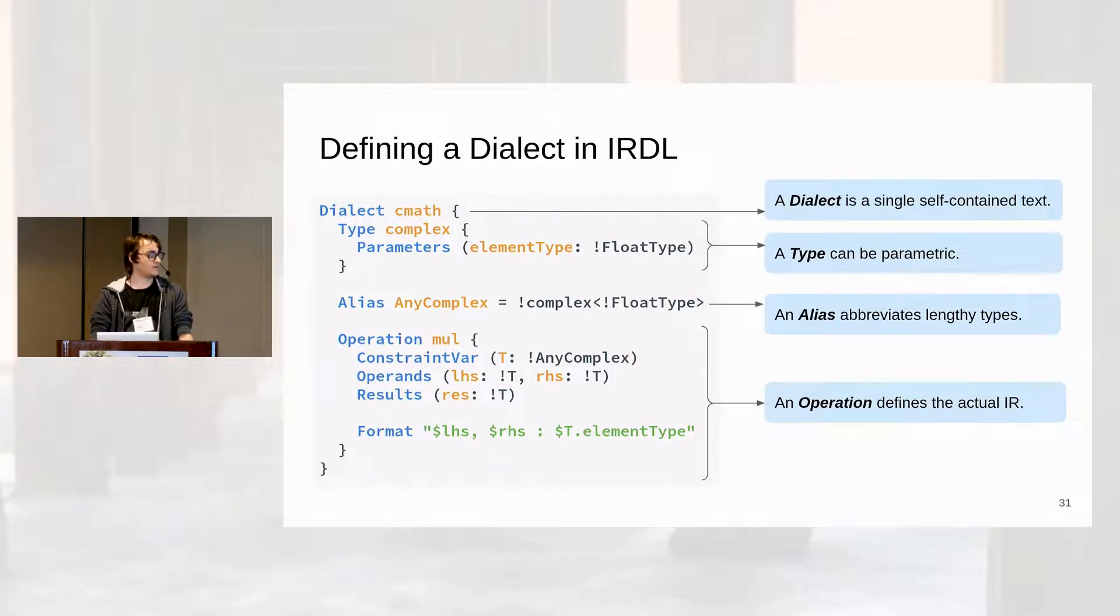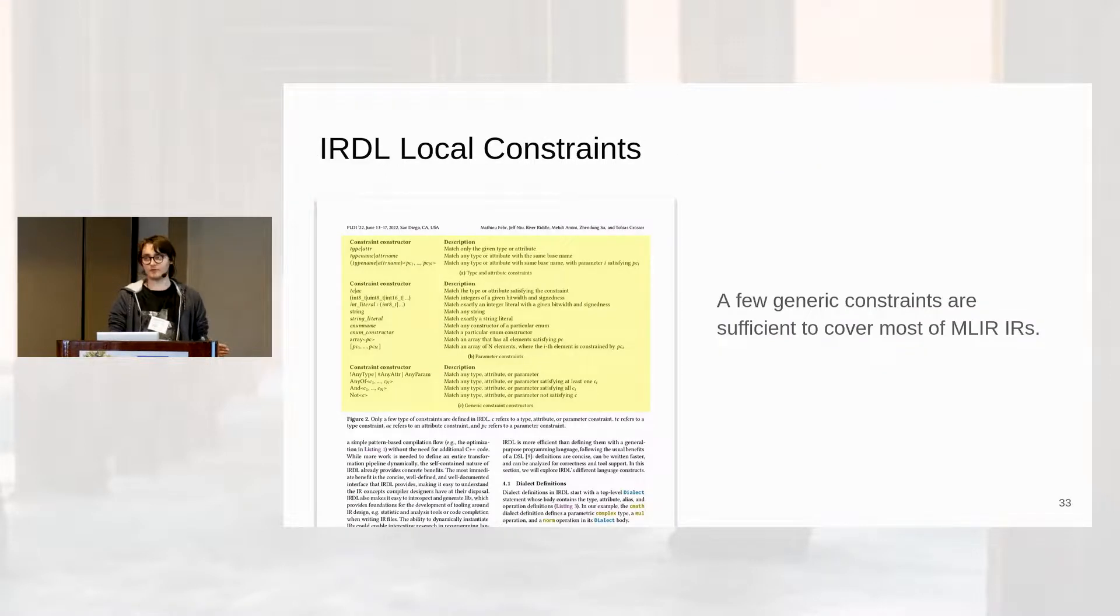Additionally, what you have is an assembly format or a way to print it and parse it in a nice way. Here we can define a custom one that has, whenever you print it, first print the left-hand side, then print the right-hand side, then print the complex type, and essentially print just the parameter of the complex type because you know that everything needs to be a complex type. And that's it. You have a dialect for your complex number representation. As I said, we have those constraints, and we describe them in the paper. There's only a few of them, and we can represent most of the MLIR intermediate representations with it.